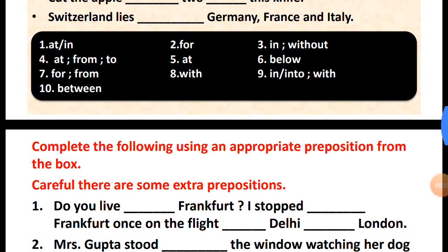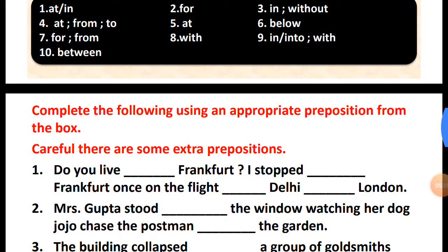Now let us come to the next practice: complete the following using an appropriate preposition from the box. Do you live — dash — Frankfurt? I stopped — dash — Frankfurt once on the flight — dash — Delhi — dash — London.